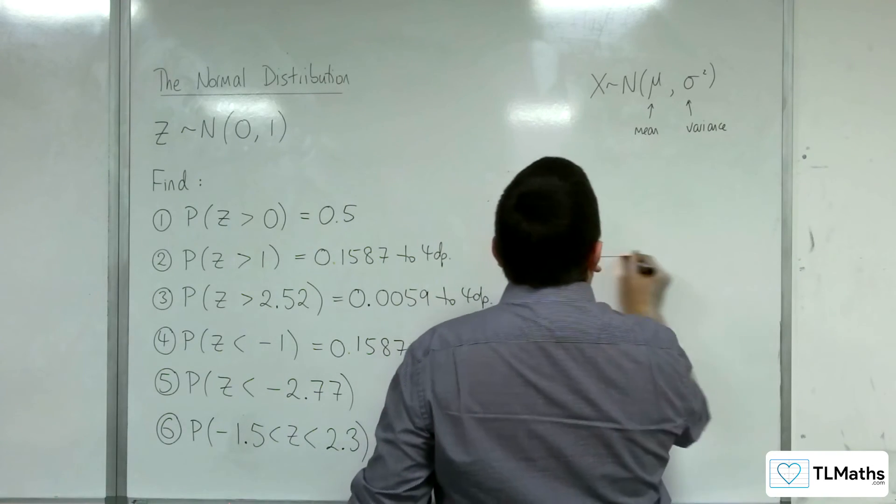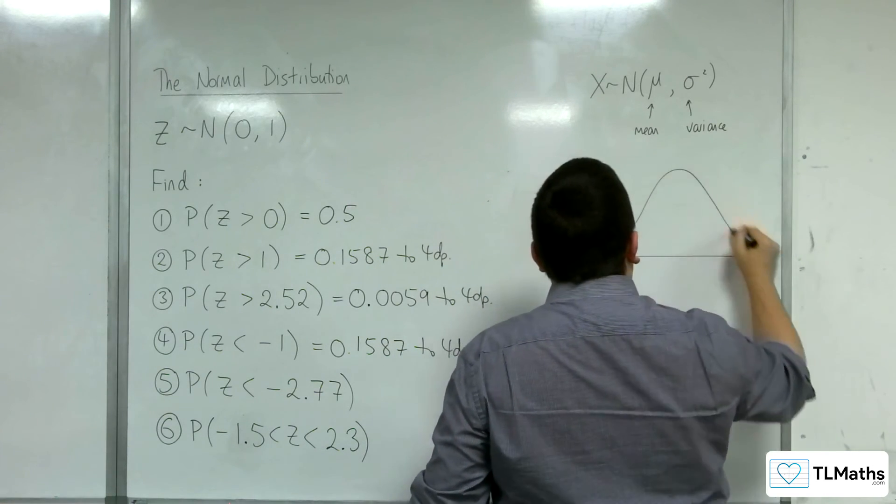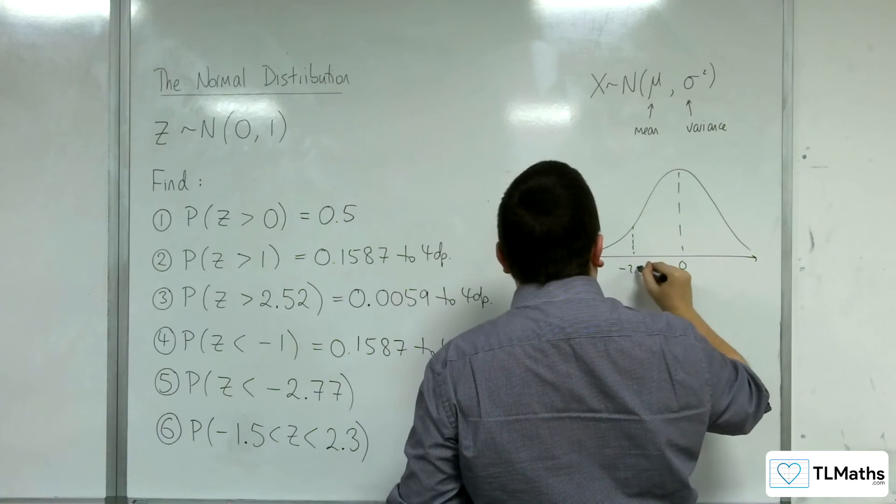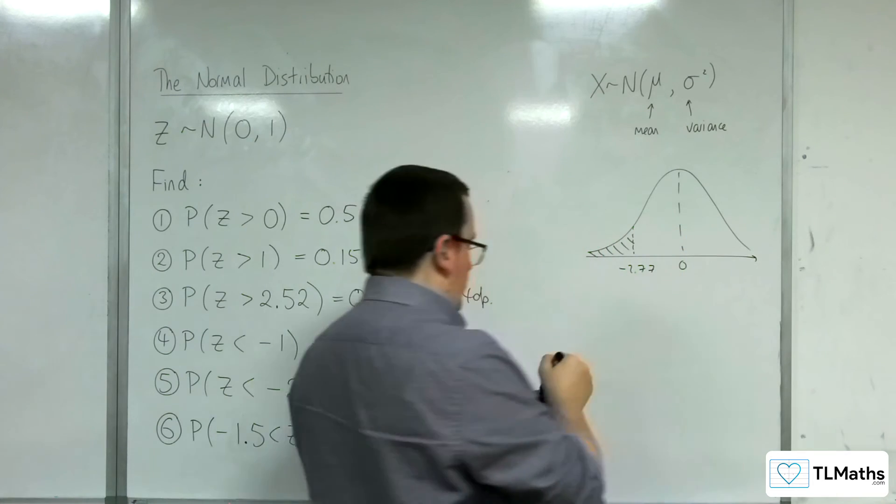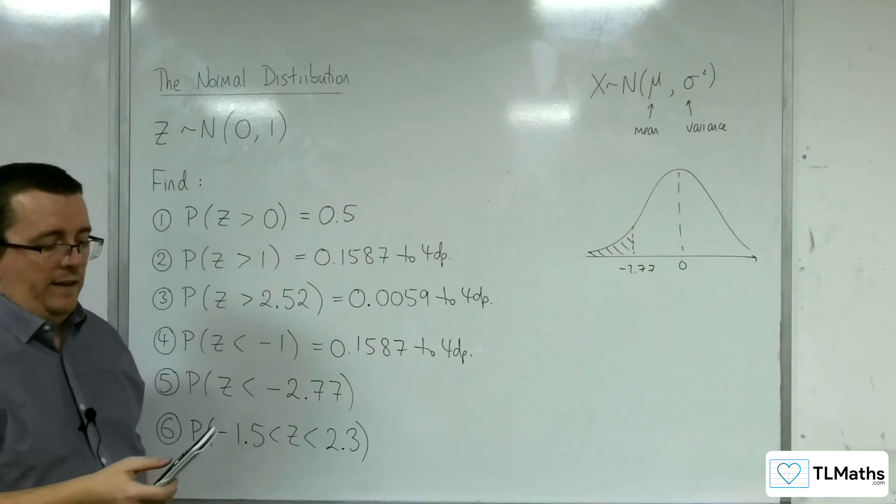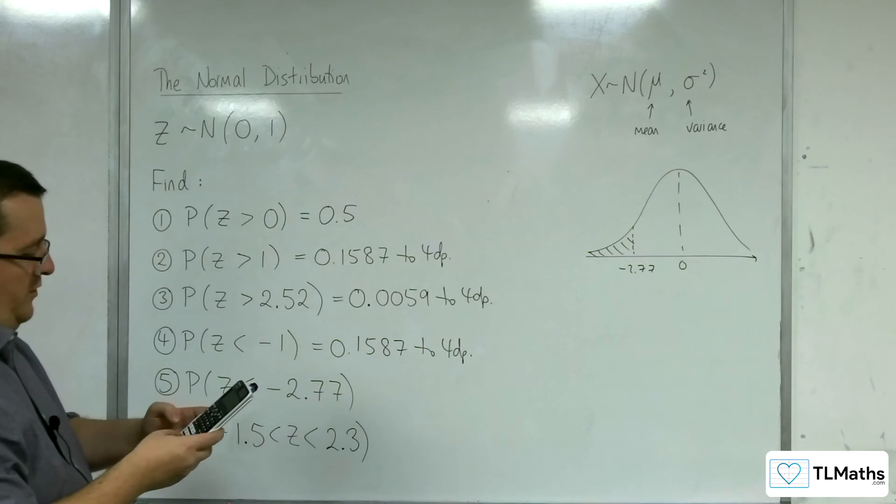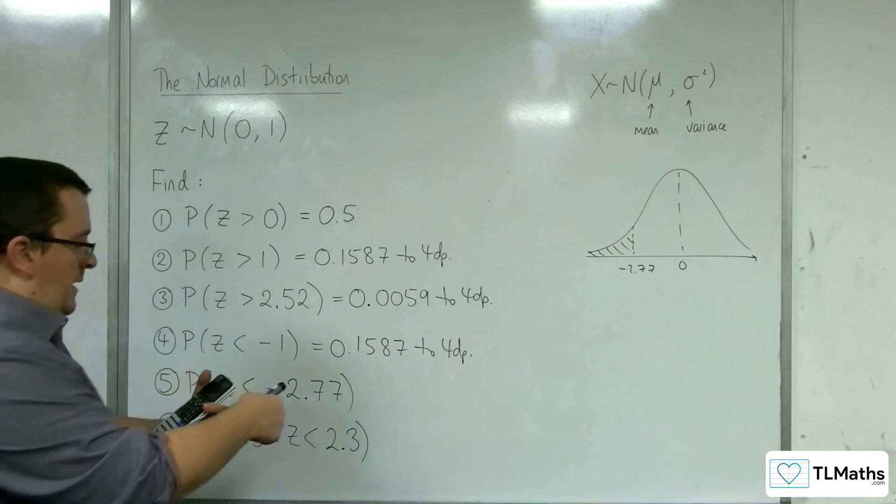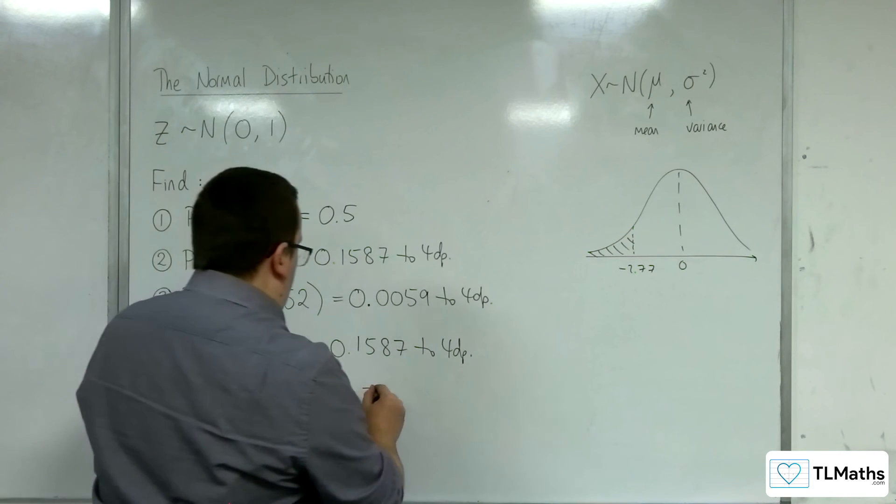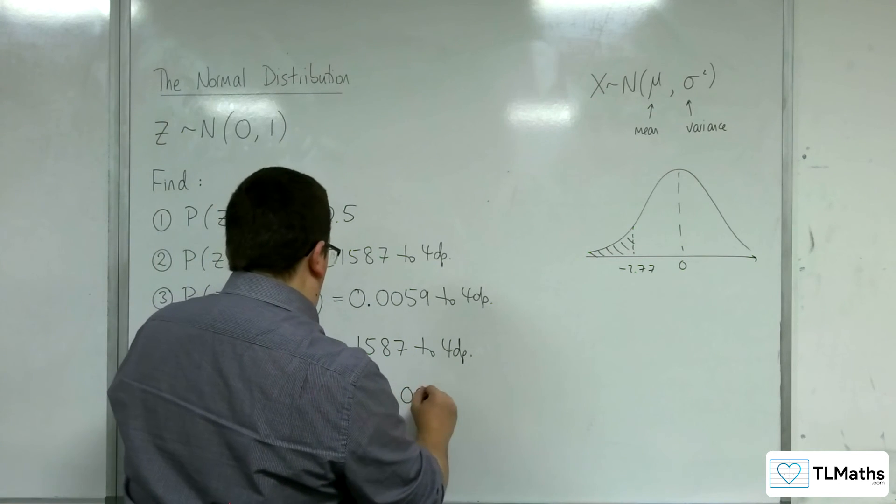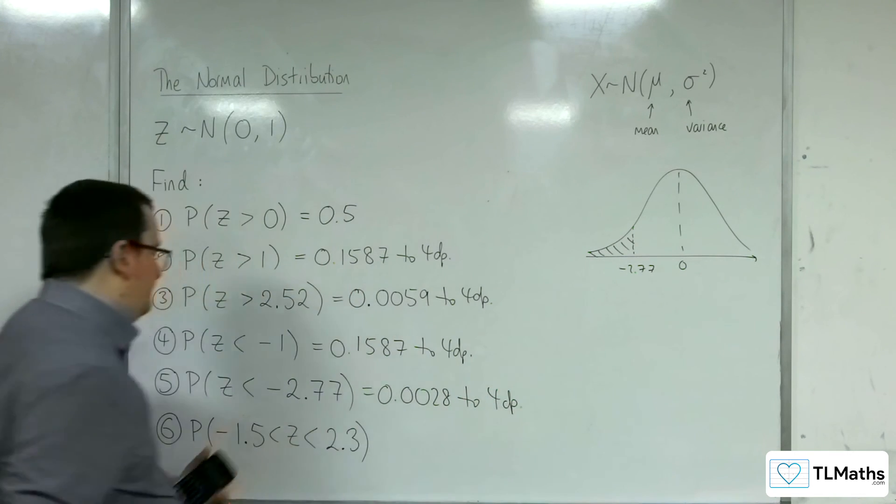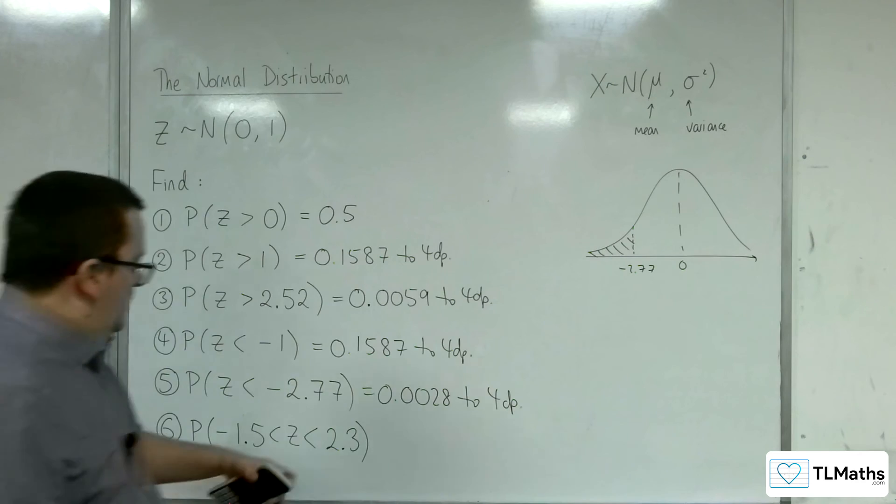So let's change it again. We're now looking at minus 2.77. So the lower value can stay at minus 10, that's fine. The upper value I'm going to change to minus 2.77. And we get 2.8028 times 10 to the minus 3. So 0.0028 to 4 decimal places. Last one.